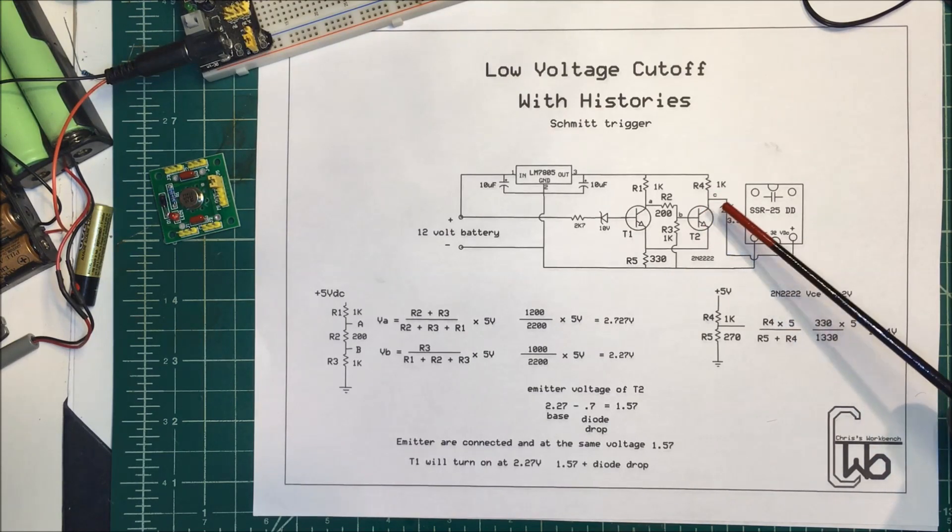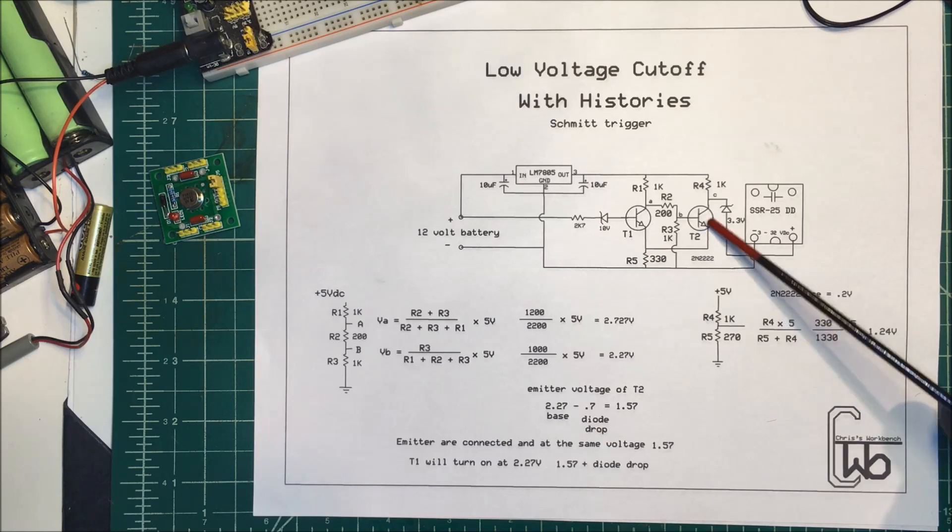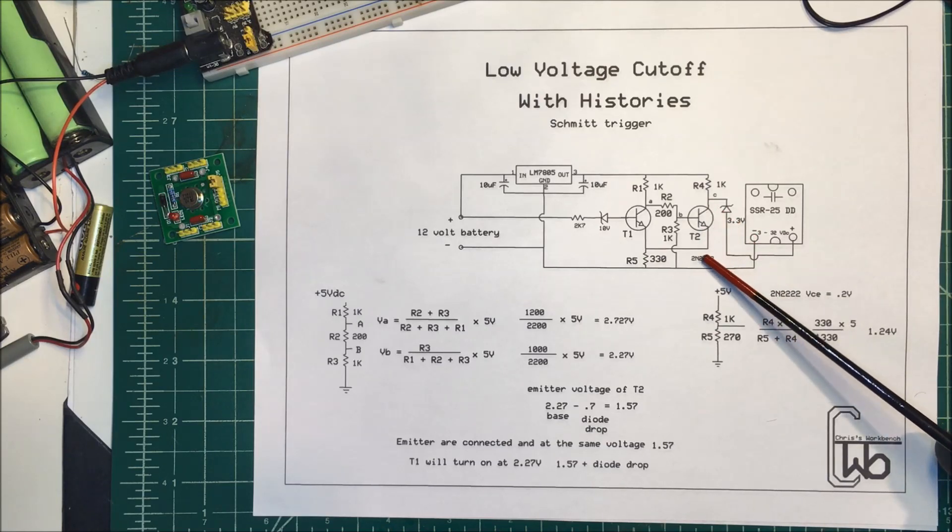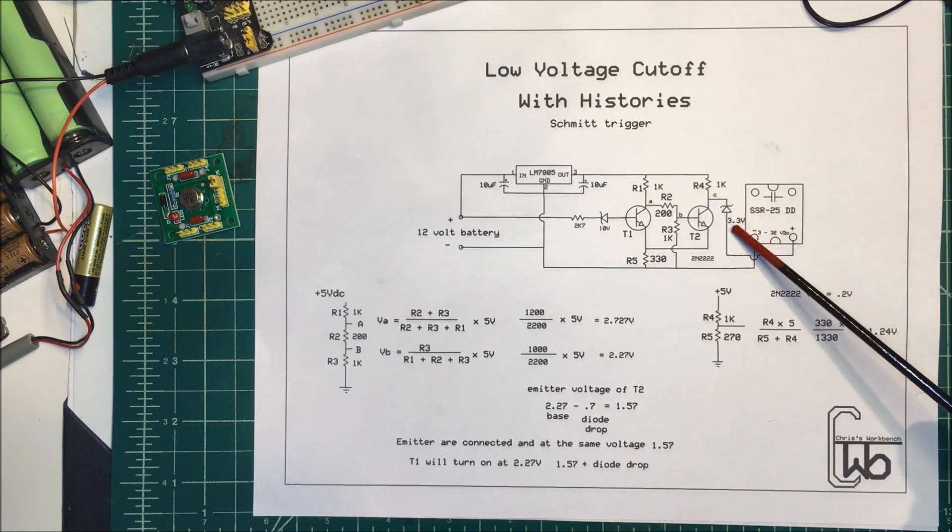Now if you look in a data sheet the VCE, the voltage from the collector to emitter when this thing's turned on is about 0.2 volts. So I am going to drop some voltage across here but at this point here I'm going to have one volt or so and I have a zener diode here, a 3.3 volt zener, so the voltage here has to rise above 3 volts to be able to turn my relay on.